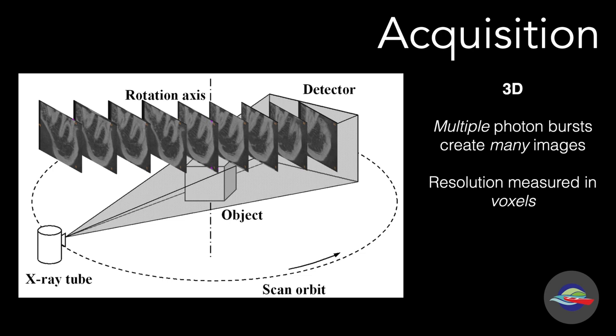The x-ray source and the detector have to rotate around the object of interest on a gantry along the scan orbit. This time, the resolution of our image — because it's 3D — is measured in voxels. Just the way we express area as units squared, we express volume as units cubed. So the resolution of a 2D image and a 3D image have to be expressed differently: pixels versus voxels.